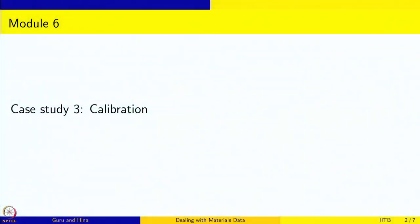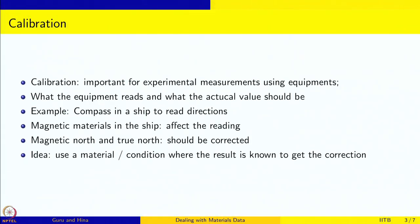Welcome to dealing with materials data. We are looking at the collection, analysis, and interpretation of data from materials science and engineering. We are in the module on case studies, and this is a case study on calibration. Calibration is important for experimental measurements using equipment — what the equipment reads and what the actual value should be can sometimes show discrepancies.